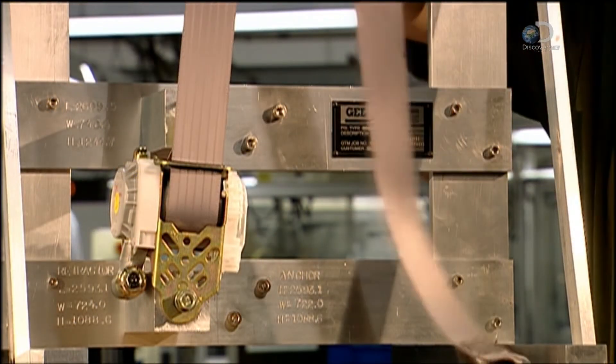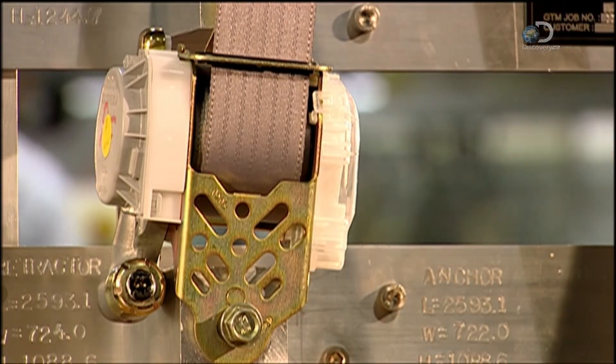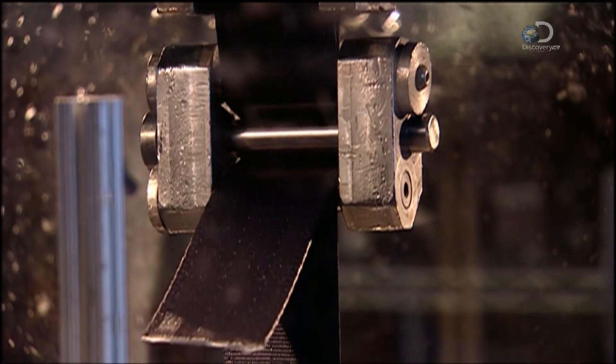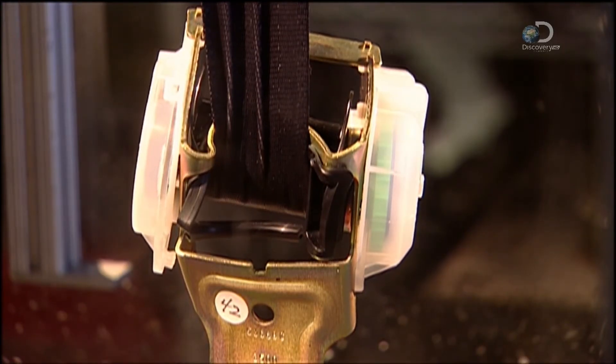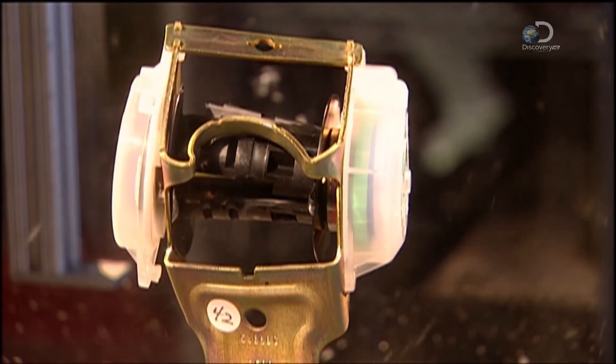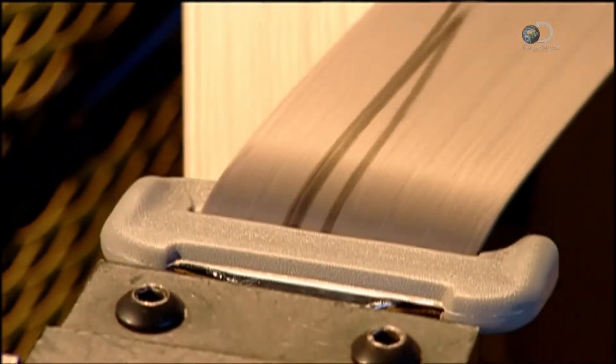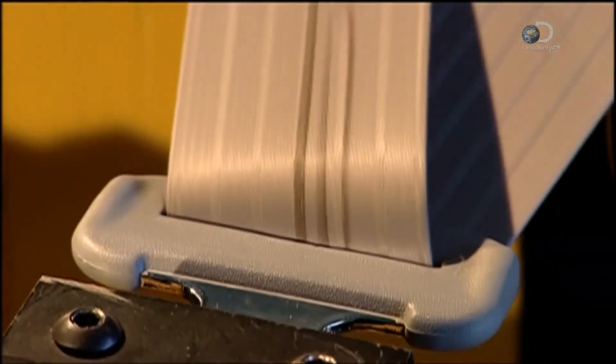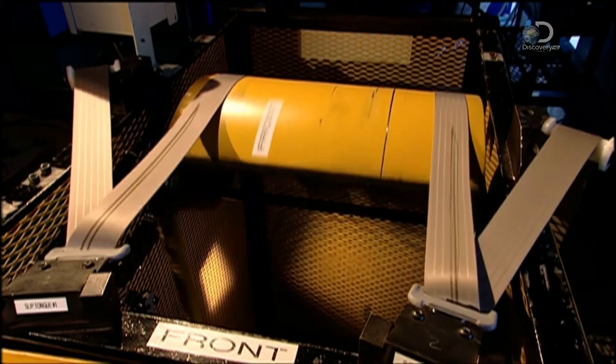Every seatbelt design goes through extensive testing before going into production. This machine assesses how much pull the webbing and retractor can withstand before breaking. This machine tests the webbing's durability. And after all that, you know you're in for a safe ride. Just make sure you buckle up each time.